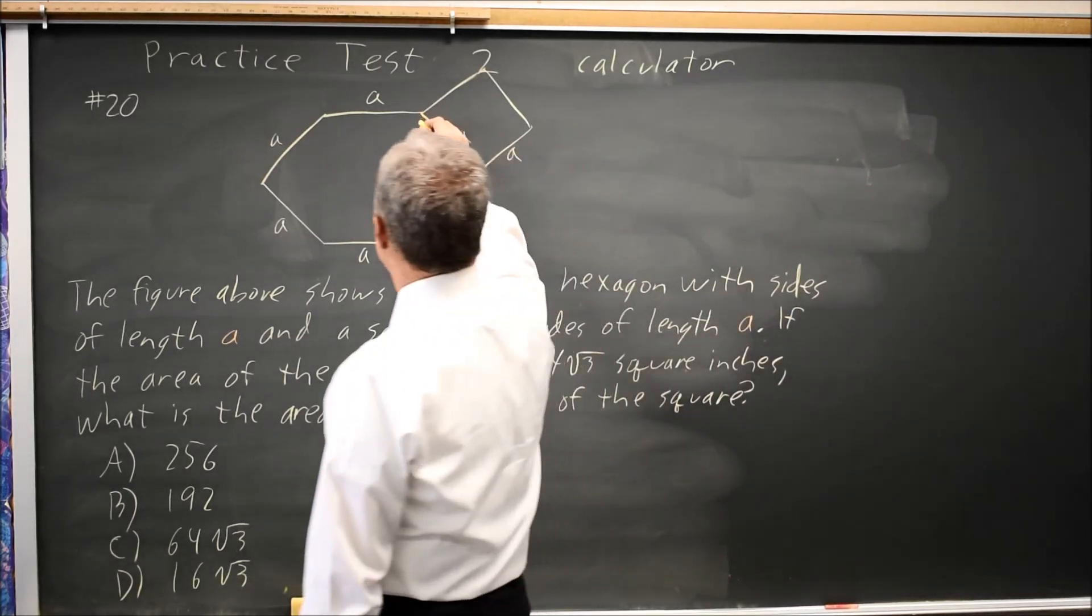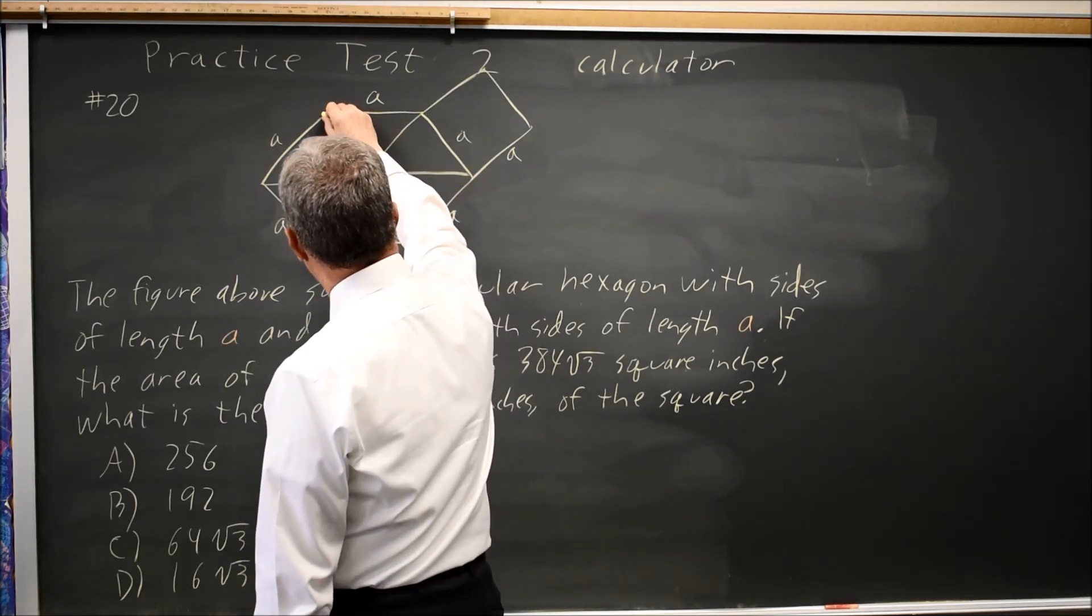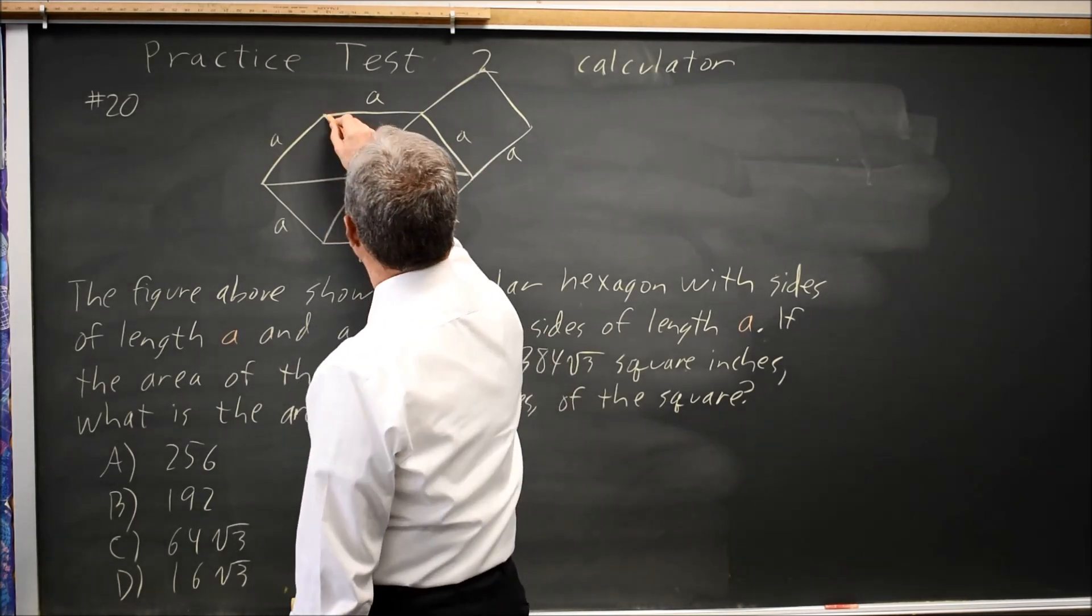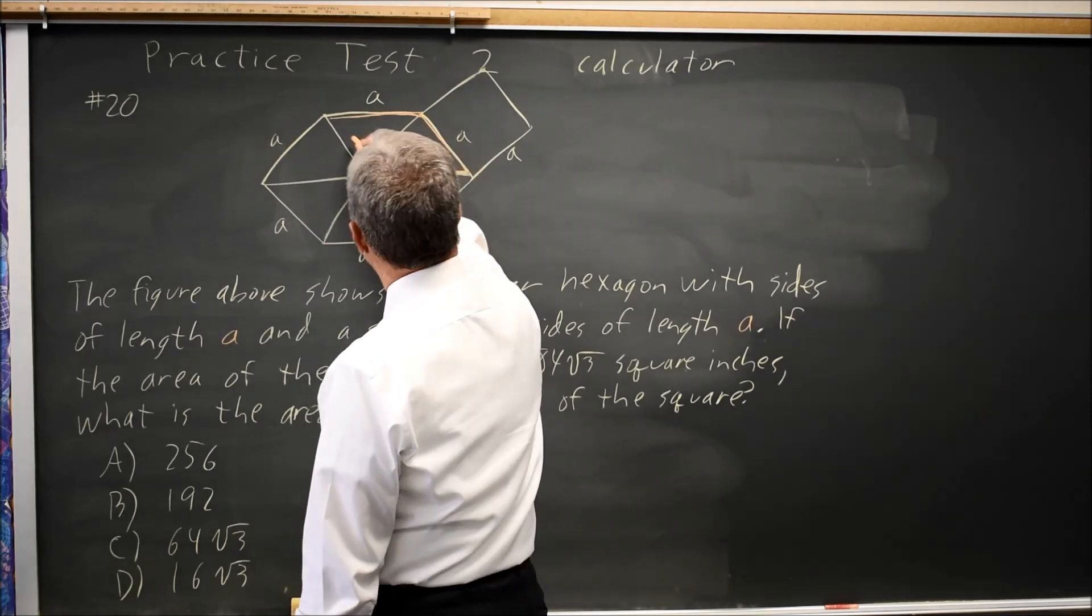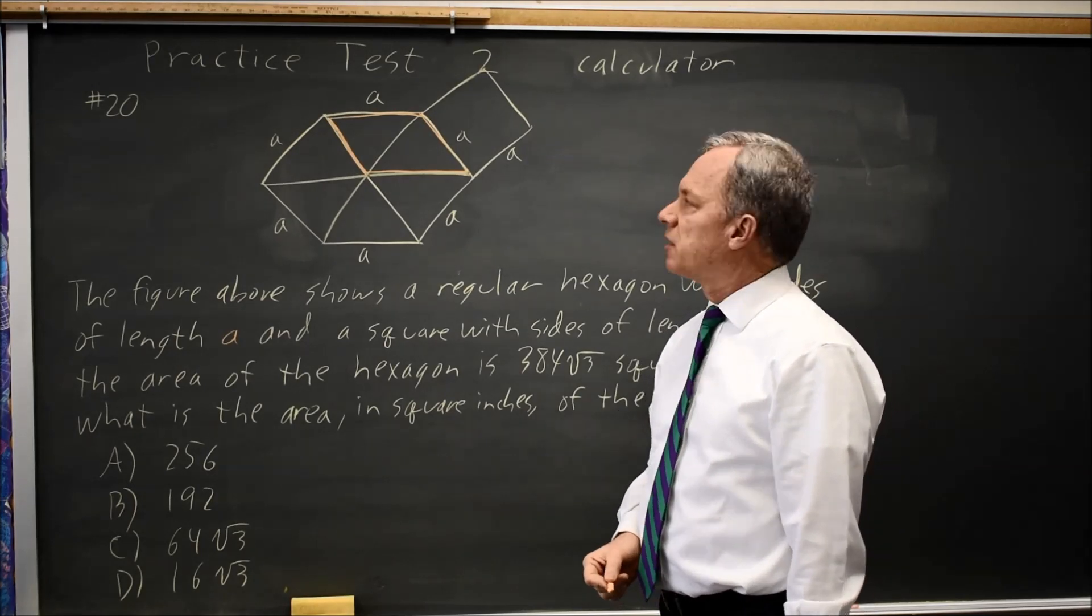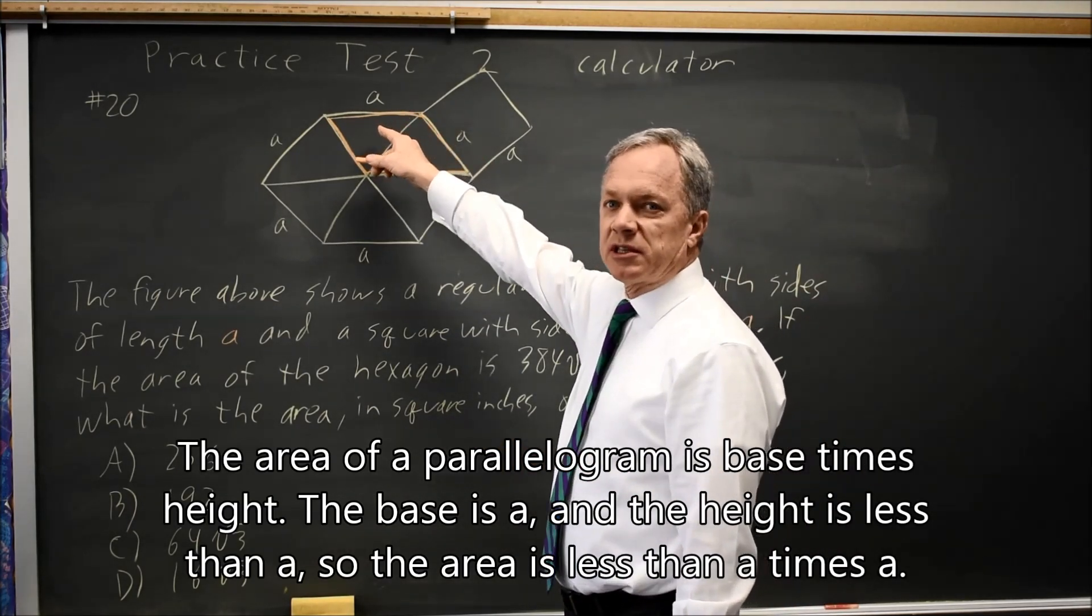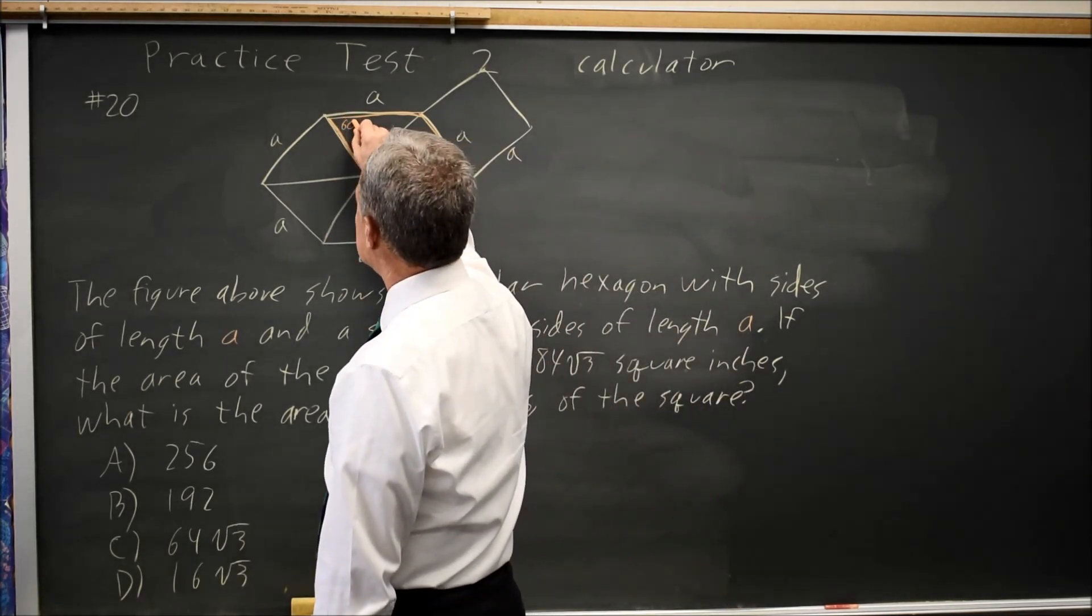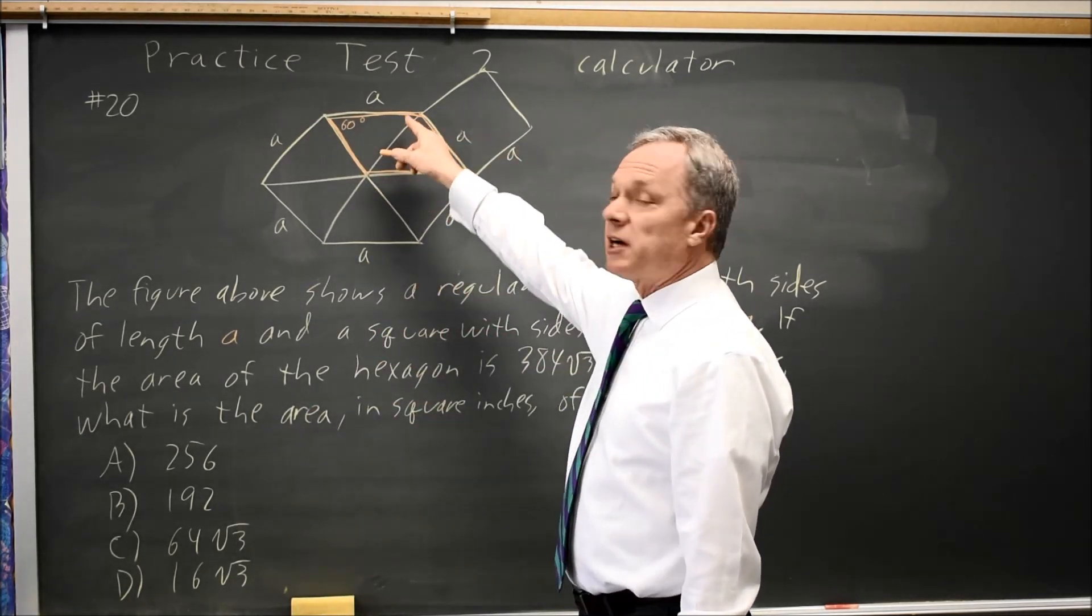But there's an easier way. A regular hexagon divides into equilateral triangles, giving us a parallelogram. The square and parallelogram both have sides of length A, but since the parallelogram has a 60-degree angle, the base is the same but the height is less.